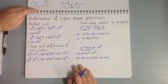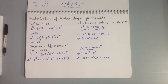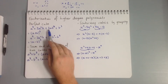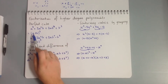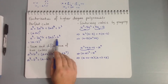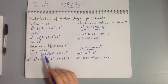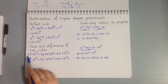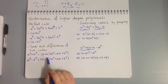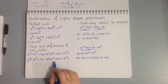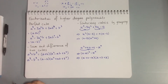Now we'll look at factorization of higher degree polynomials — cubics and so on. If we have a³ + 3a²b + 3ab² + b³, that's a perfect cube and factorizes to (a + b)³. Similarly, a³ - 3a²b + 3ab² - b³ = (a - b)³. For the sum and difference of two cubes: a³ + b³ = (a + b)(a² - ab + b²).